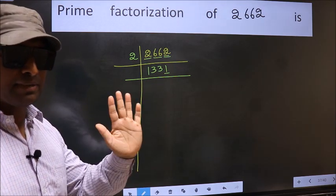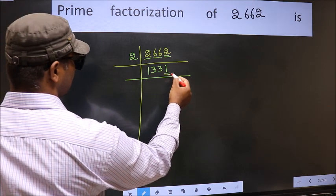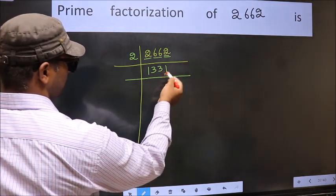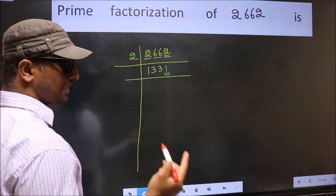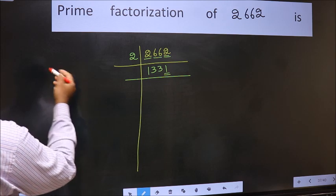Next, prime number 5. The last digit is neither 0 nor 5. So, this is not divisible by 5. Next, prime number 7. Let us check divisibility by 7 here.